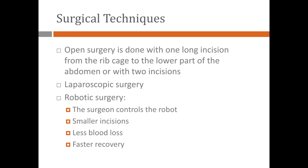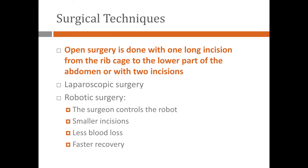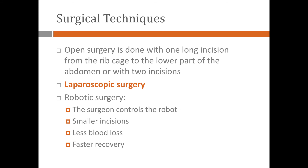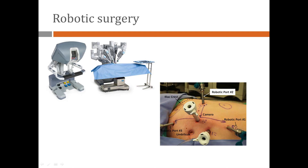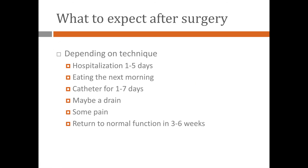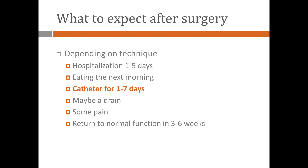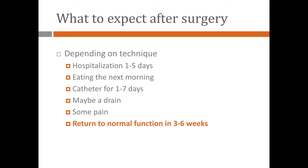There are a few ways we can do this. We can do open surgery with one incision extending from the ribcage all the way down to the lower part of the abdomen, or more than one incision. We can also use minimally invasive surgery — laparoscopic or robotic surgery — with smaller incisions. Of note, the robot doesn't do anything by itself; the surgeon is in control and uses the robot to place instruments inside the abdomen. Most patients will stay in the hospital for one to five days, will be able to eat the same day or the next day, and the vast majority will return to almost normal function within three to six weeks after radical nephroureterectomy.